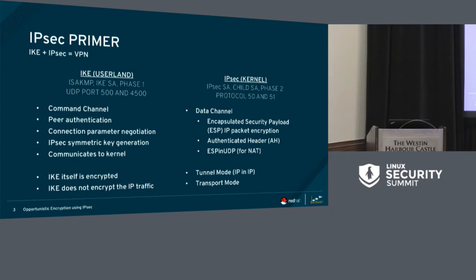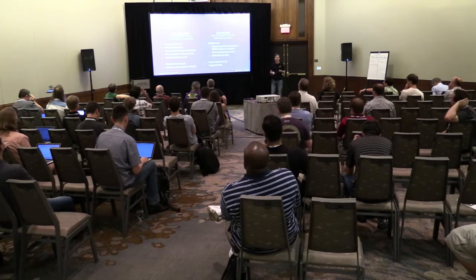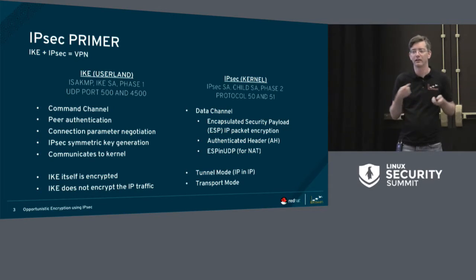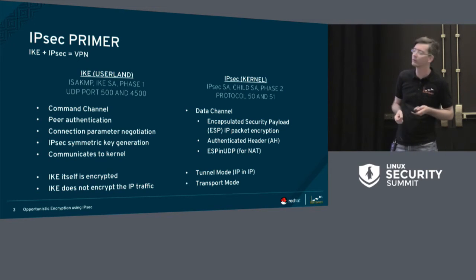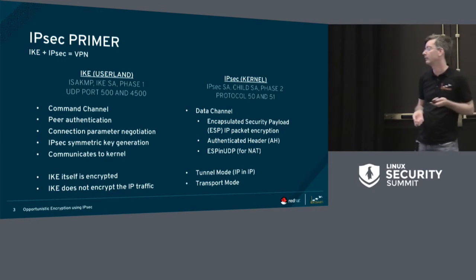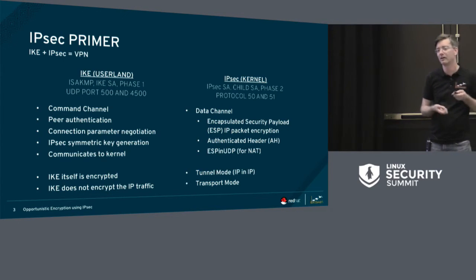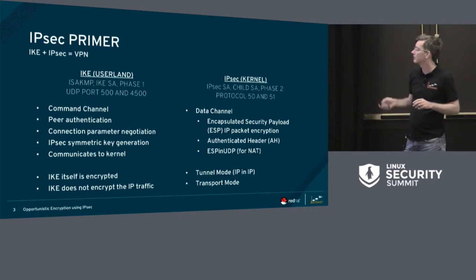IPsec basically consists of two parts, and it's a little confusing because people tend to call the whole thing IPsec. But IPsec is really the data channel — that's where all the packets are encrypted and decrypted, usually by the kernel. IKE is the command channel, the userland application that sends negotiation packets to authenticate the other peer and then set up what they call an IPsec security association. After authentication, they agree on key material and send it to the kernel which does the encryption. There's also parameter negotiation for which IP addresses are allowed. IPsec is not a virtual ethernet — you're supposed to clamp down on policies of source, destination, address, ports, and protocol. IKE itself is encrypted; don't mistake that for the encryption of the packets — those are two separate things.